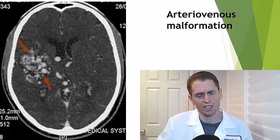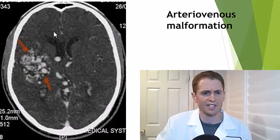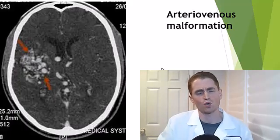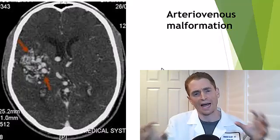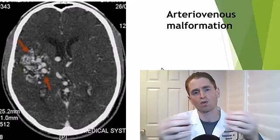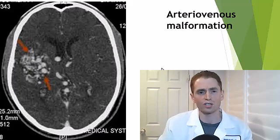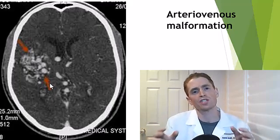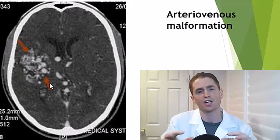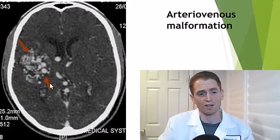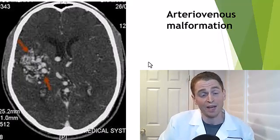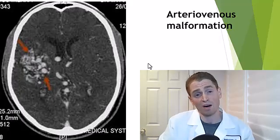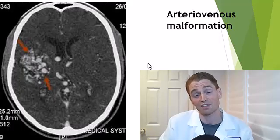This CT angiogram shows an arteriovenous malformation, an abnormal connection between the arteries and veins causing a massive cluster of blood vessels. Normally you have arteries forming smaller and smaller branches, eventually forming capillary beds, which then reform larger and larger veins. But with a direct arteriovenous connection, you get this enlarged cluster of blood vessels, which can cause no symptoms but carries a risk of bleeding into the brain. However, an incidentally discovered unruptured AVM has a surprisingly lower than expected risk of hemorrhage.